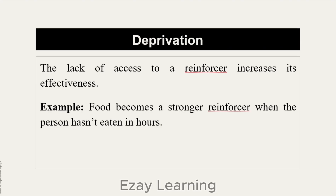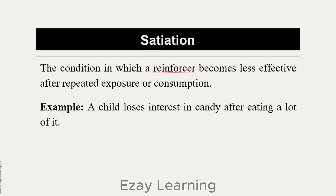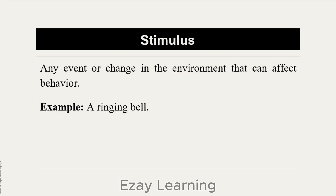Satiation: the condition in which a reinforcer becomes less effective after repeated exposure or consumption. Satiation is basically the opposite of deprivation — deprivation was lack of access, while satiation is over-consumption or repeated exposure, making the reinforcer less effective. Stimulus is quite a common term used in ABA; it basically refers to any event or change in environment which affects behavior — for example, a ringing bell.